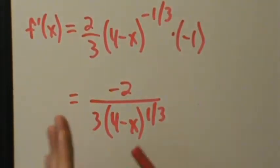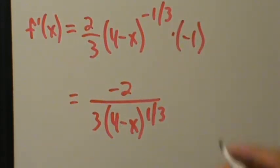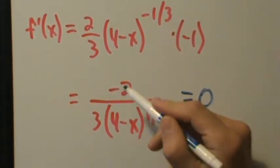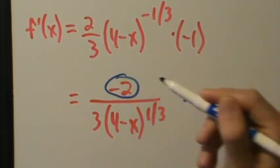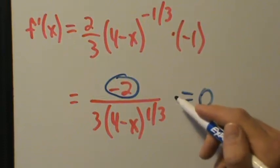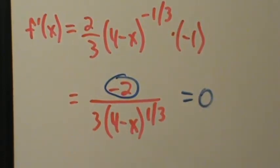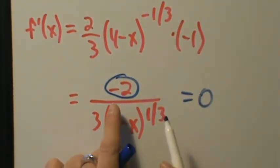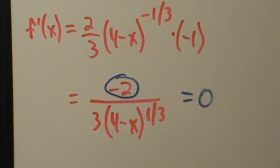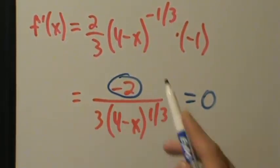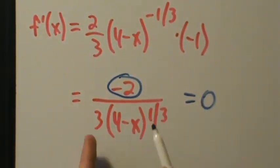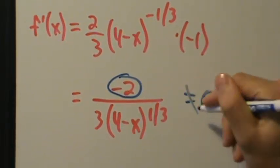Now we want to know where this derivative is zero and where it's undefined. A fraction equals zero when the numerator is zero. But the numerator is just negative two — negative two is never zero — so this derivative is never equal to zero. There are no values of x that make this derivative zero.